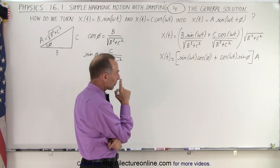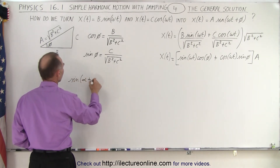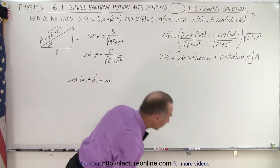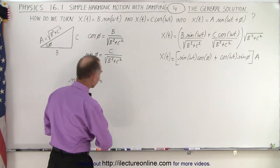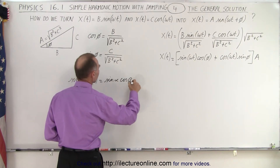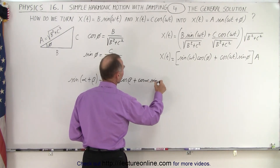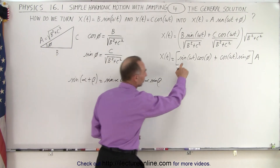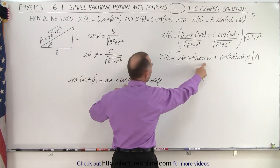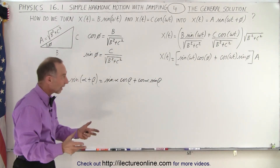Now we can look at that and say that looks like an identity. The sine addition identity states: the sine of alpha plus beta is equal to the sine of alpha times the cosine of beta plus the cosine of alpha times the sine of beta. If you look at our expression and compare it to this identity, it has the exact same format. So if alpha is omega t and beta is phi, then we have sine of omega t times cosine of phi plus cosine of omega t times sine of phi — that works, that's exactly the same.